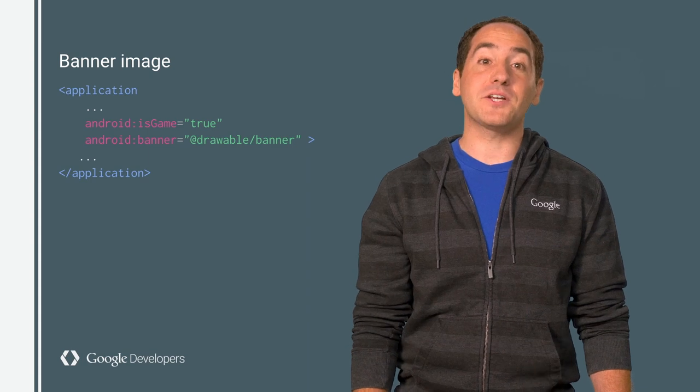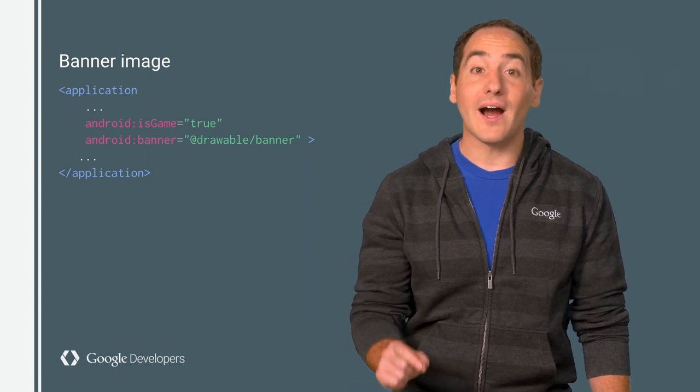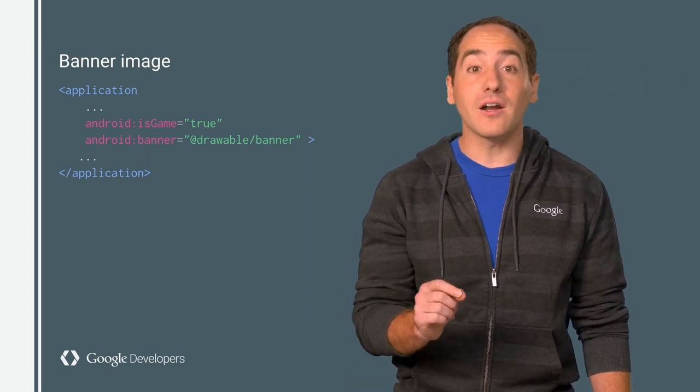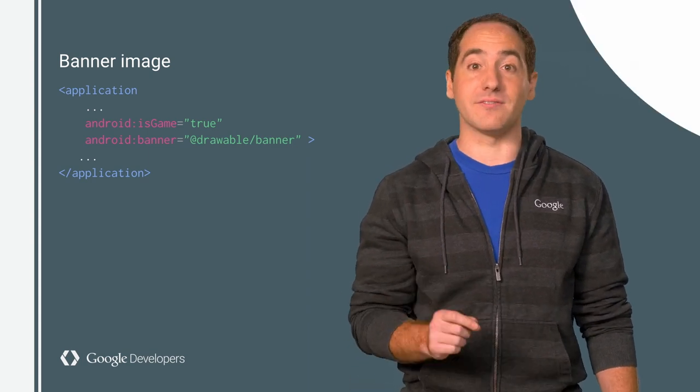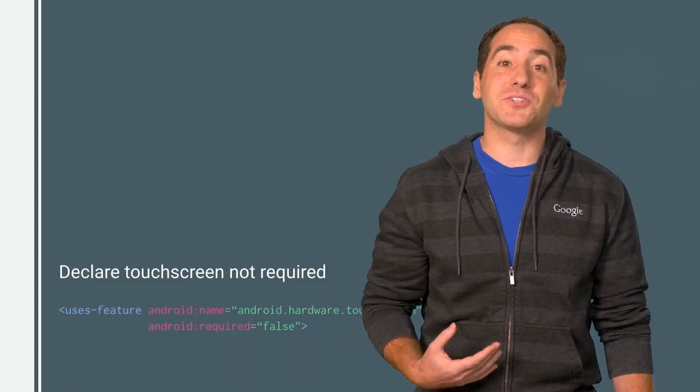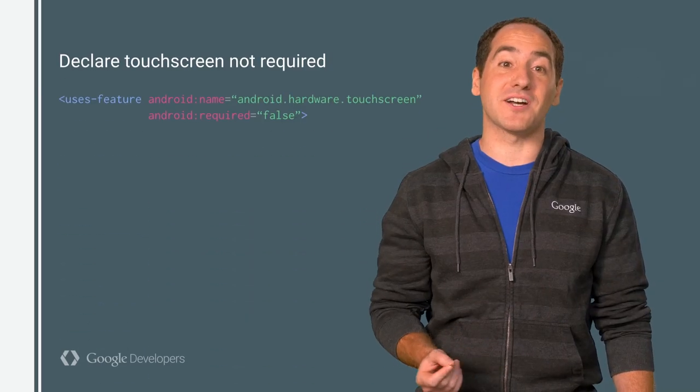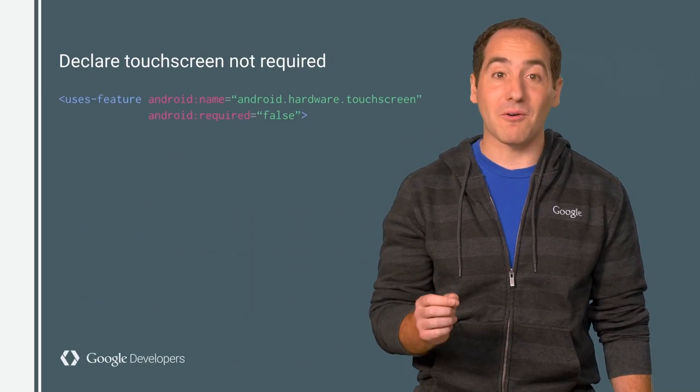Also in your manifest, you'll need to make sure you don't require any hardware features that are unavailable on the TV. For example, if your game requires a touch screen in the manifest, your app won't be listed as compatible with TVs in the Play Store. So start by declaring that a touch screen is not required.